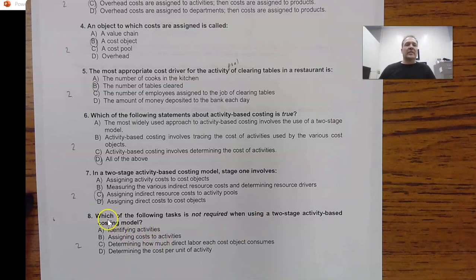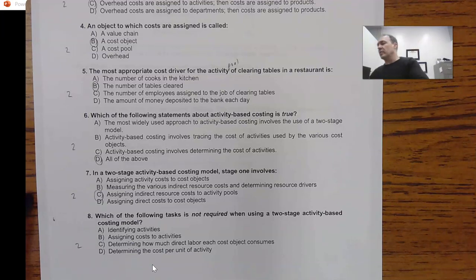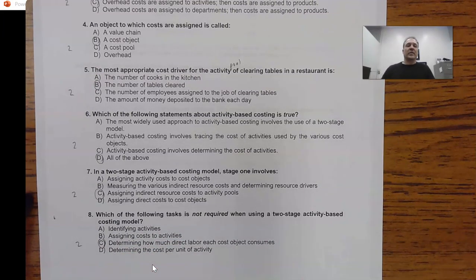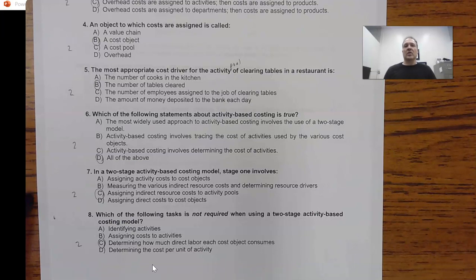Question 8 asks: 'Which of the following tasks is NOT required when using a two-stage activity-based costing model?' The answer is choice C: determining how much direct labor each cost object consumes. When talking about activity-based costing or traditional costing, what we're concerned with is overhead. Direct labor cost is a prime or direct cost input — it doesn't have anything to do with our overhead application method.